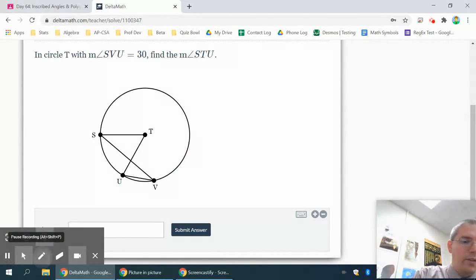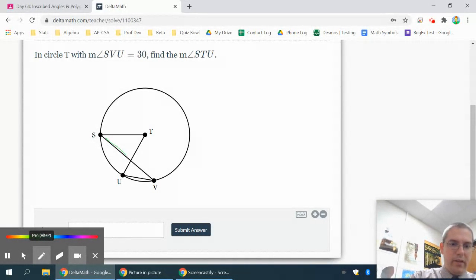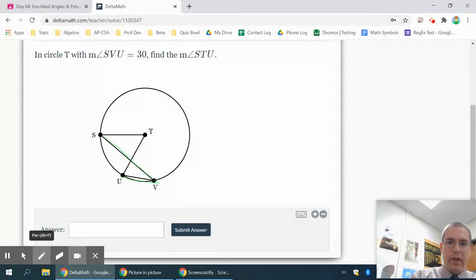Okay, let's mark the angle it's telling us. So it's talking about S, V, U, so start at S, then go to V, then go to U, and they're saying that angle there is 30 degrees, so this angle here is 30 degrees.